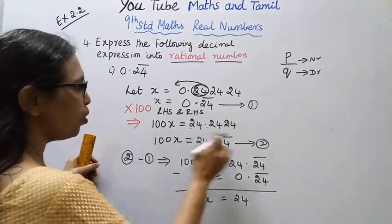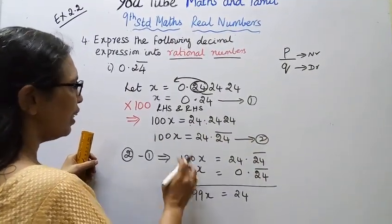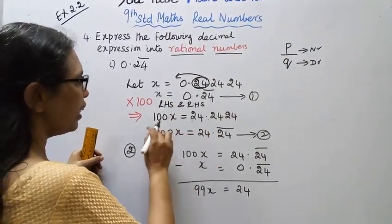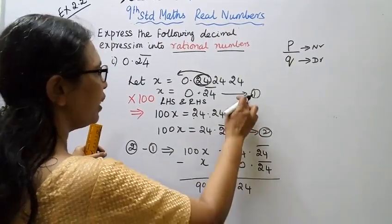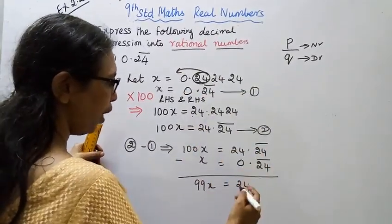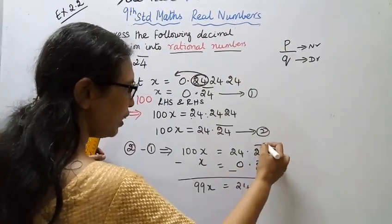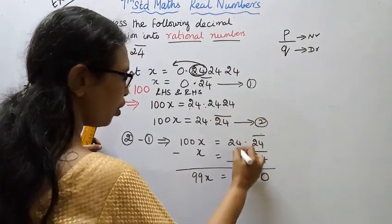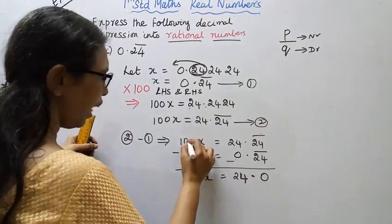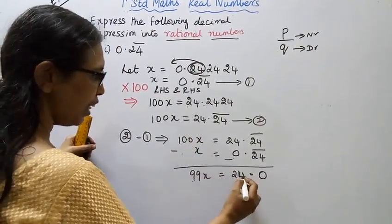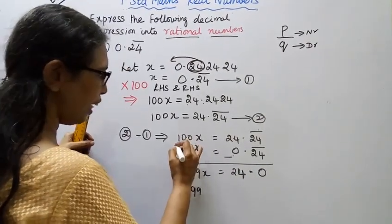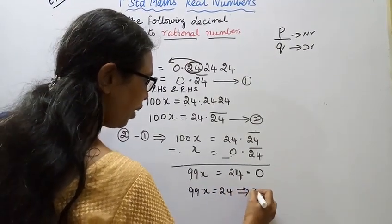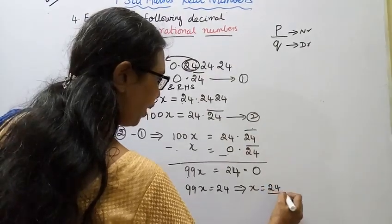Now equation 2 minus equation 1. 100x minus x. Left hand side 100x, here is x. 100x minus 1x. Here is 24.24 bar minus 0.24 bar. Subtract. 100 minus 1 is 99x. 99x equals 24.